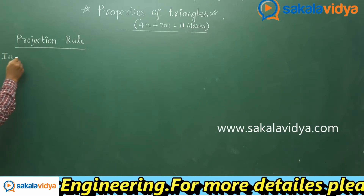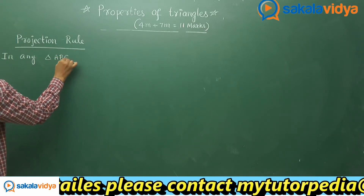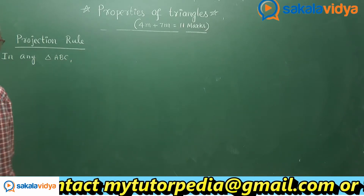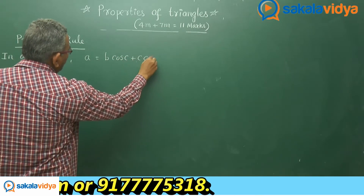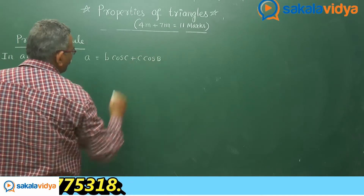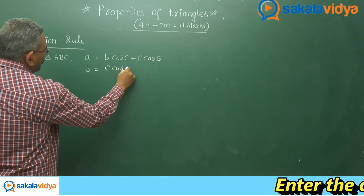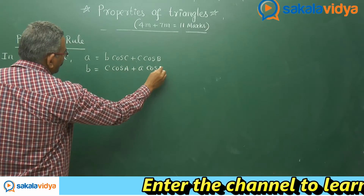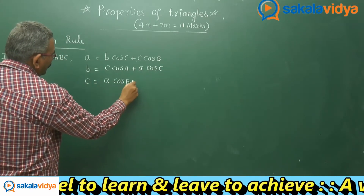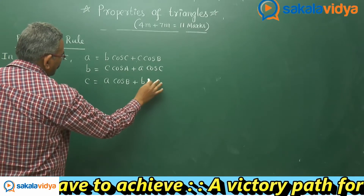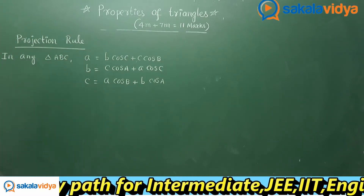In any triangle ABC, with usual notation, we have: a is equal to b·cos C plus c·cos B. Next, b is equal to c·cos A plus a·cos C. And c is equal to a·cos B plus b·cos A. These three are called the projection rule.